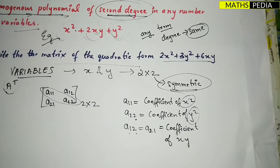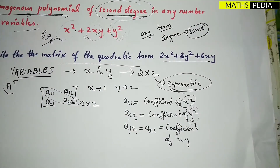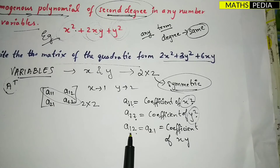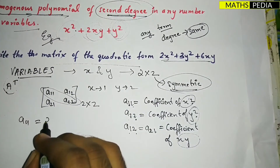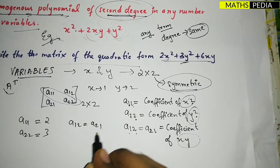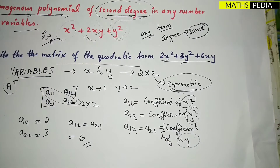A useful trick: consider x as 1 and y as 2. Then a₁₁ means x·x = x², a₂₂ means y·y = y², and a₁₂ means x·y = xy. Also remember: for off-diagonal elements, you take half of the coefficient. So a₁₁ = 2 (coefficient of x²), a₂₂ = 3 (coefficient of y²), and a₁₂ = a₂₁ = half of 6 = 3.